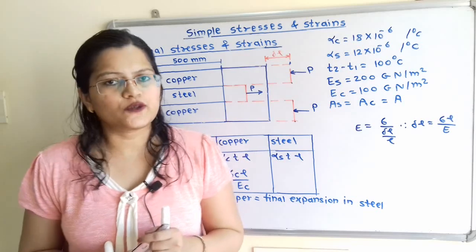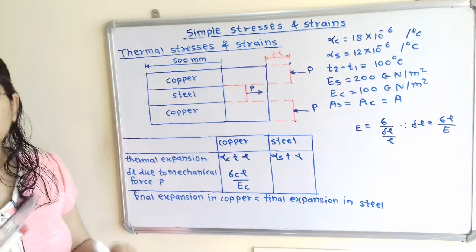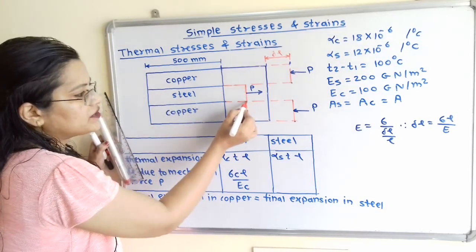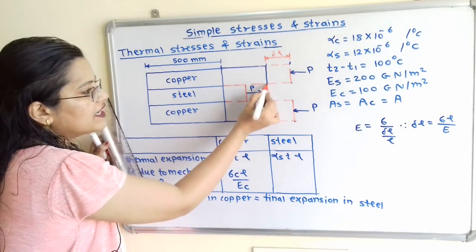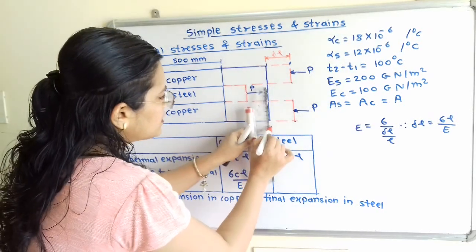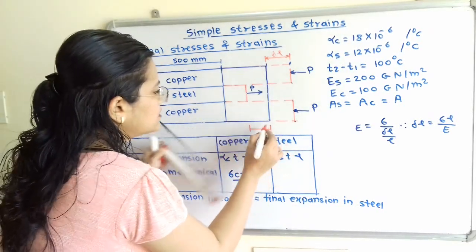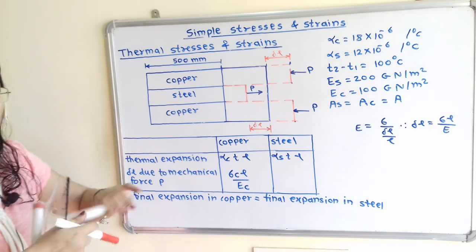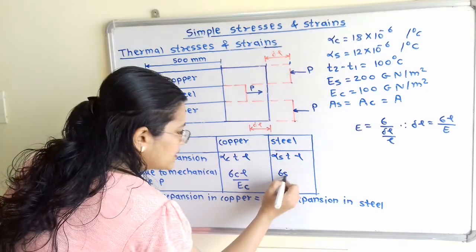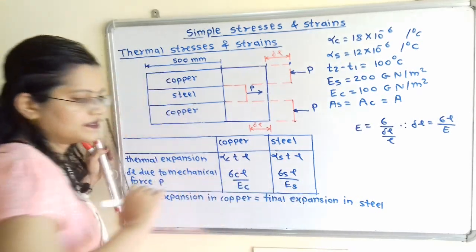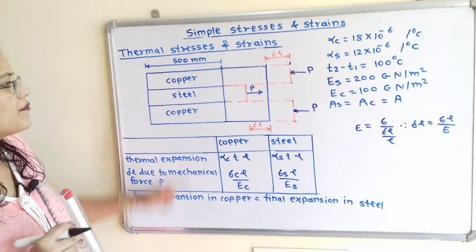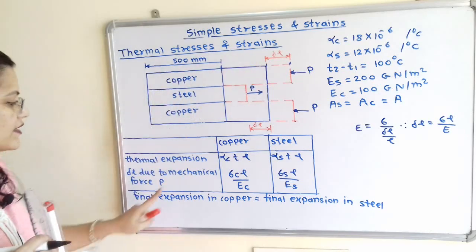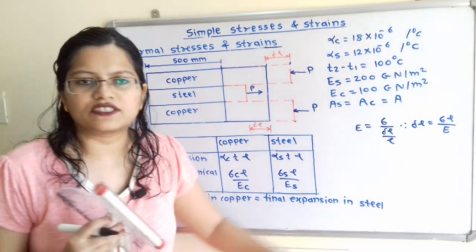For the steel material, there is also a change in length due to the tensile force P. The steel initially expands thermally, and then increases further due to the tensile force. So the change in length in steel is σ_S · L / E_S. Since the ends are rigidly connected, the final expansion in copper equals the final expansion in steel.